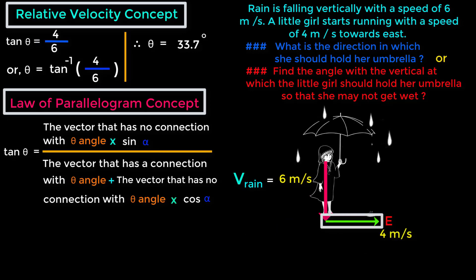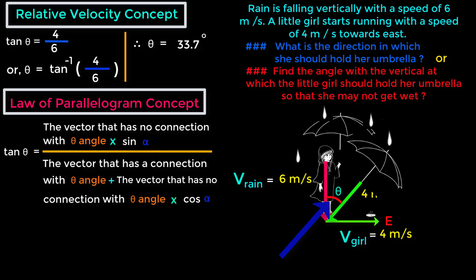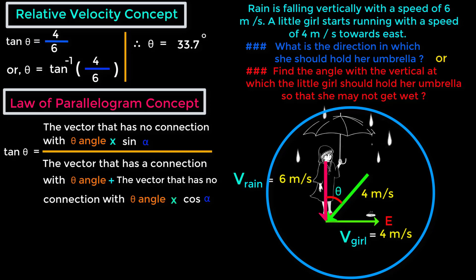The girl's velocity is also a vector as it has both magnitude and direction, called V_girl. Before she started running she was safe, but once she starts running at 4 meters per second, she will see the rain appearing to come from the opposite direction towards her with the same magnitude. For this she will get wet. That is why she has to hold her umbrella at an angle θ with the vertical. The value of θ tells us at which angle she must hold her umbrella. From this picture alone we cannot find θ because the two vectors are not in an appropriate position.